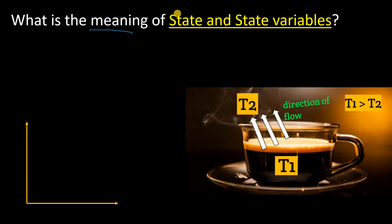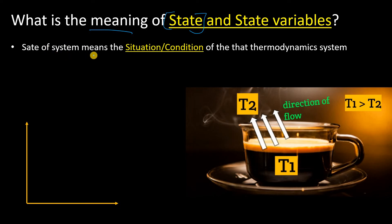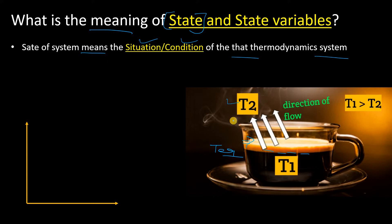What is the meaning of state? The state of a system means the situation or condition of that thermodynamic system. Suppose I have here a cup of tea — this is my system — with temperature T1, and the surrounding temperature is T2. We know about system and surrounding from the previous video. This cup of tea is my system and everything except the system is the surrounding.